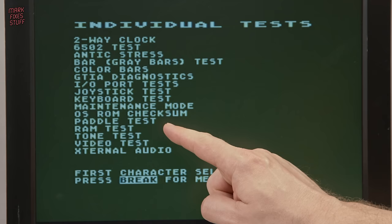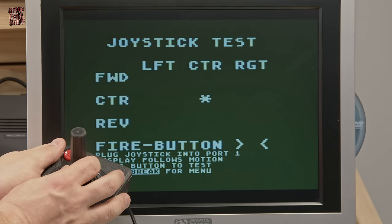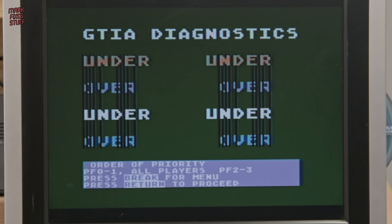In the individual test menu, the first character of the line selects that test. So, for example, for joystick test, you would press J. Then you can have all the fun in the world waggling your joystick and flicking your button to your heart's content.